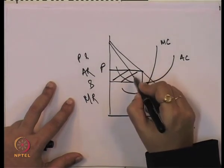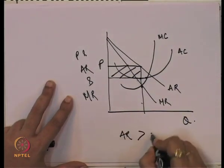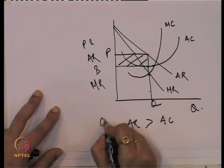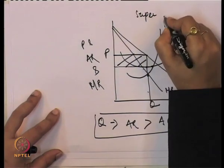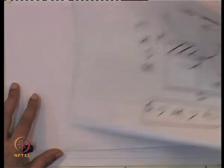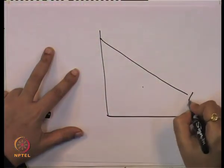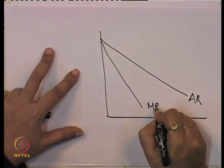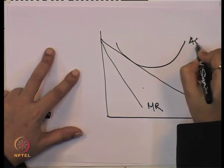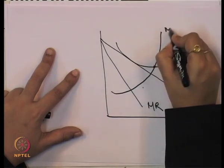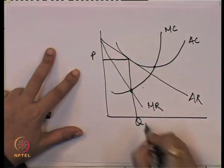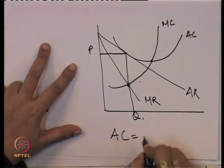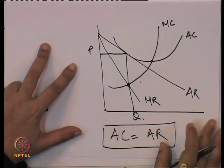Since average revenue is greater than average cost at the profit-maximizing level of output, the firm gets super normal profit. In the case of normal profit, we take average revenue, marginal revenue, average cost, and marginal cost. Corresponding to where marginal cost equals marginal revenue, we get equilibrium price and quantity. When average revenue equals average cost, the firm is just getting normal profit.